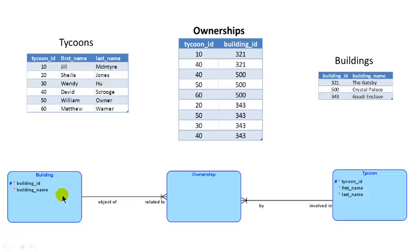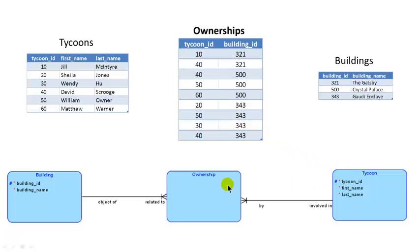Now look at the cardinalities. Every building might have multiple ownerships — building 321 has two, 500 has three, 343 has four. So clearly every building can have multiple ownerships. And from our example, every building must be owned by at least one person, therefore the line near Building is solid. Similarly, every tycoon has multiple ownerships — for example, tycoon 40 has three ownerships. So a tycoon can have many ownerships, hence a crowfoot. And every tycoon must have at least one ownership, otherwise we wouldn't store them in the database, so a solid line on the Tycoon side.